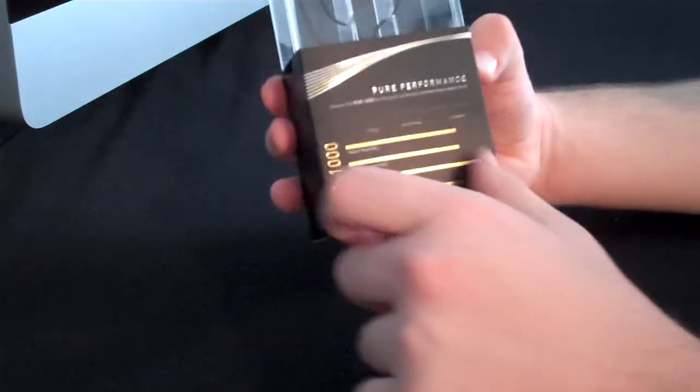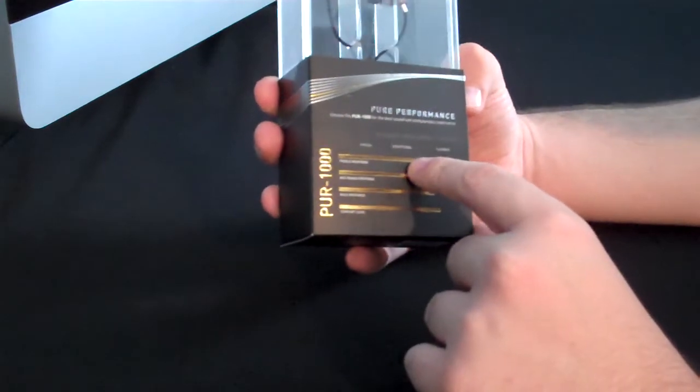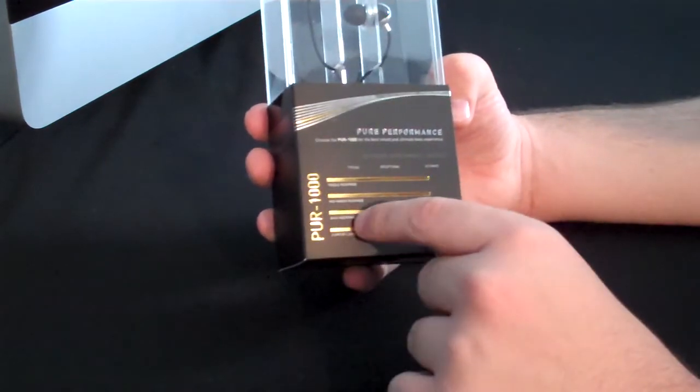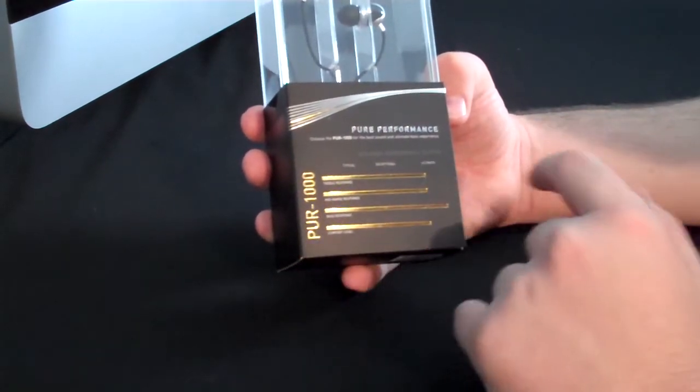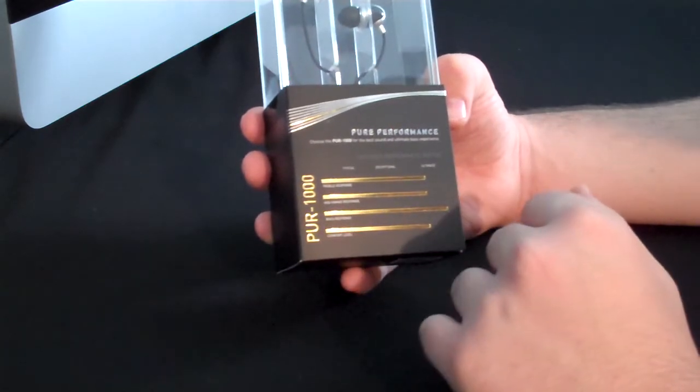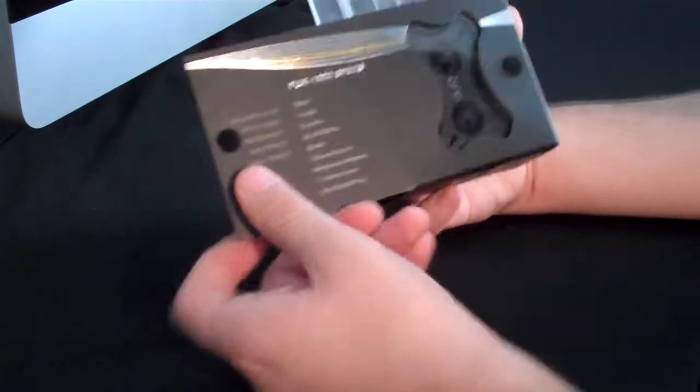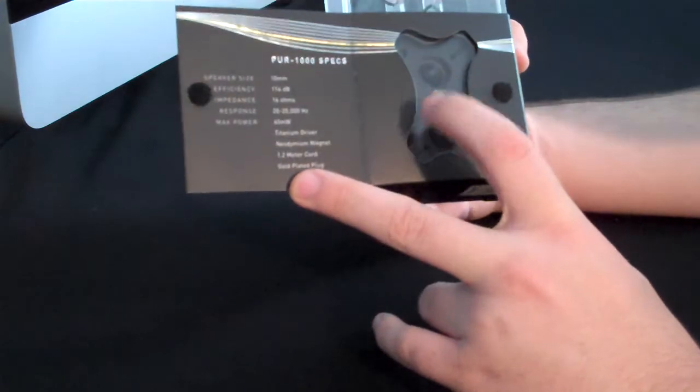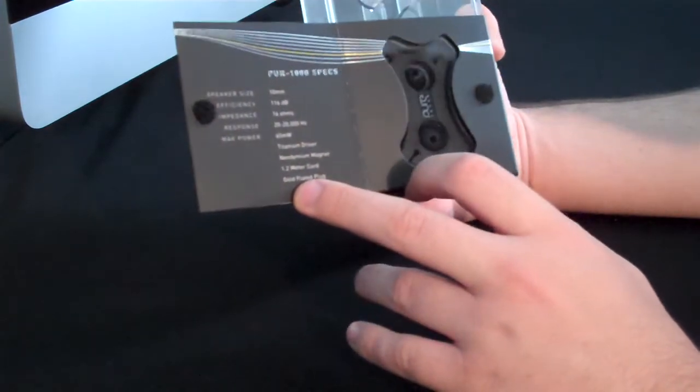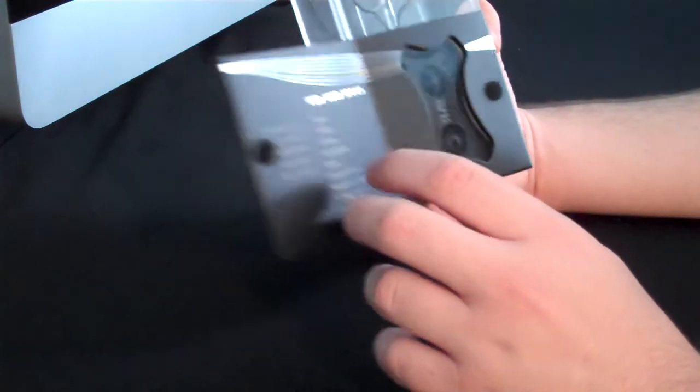Then you turn around the back, it has all these bars showing the treble response, the mid-range response, the bass response, the comfort level. And inside, it shows you the extra ear tips that are included. And here's the specs.